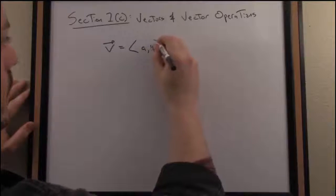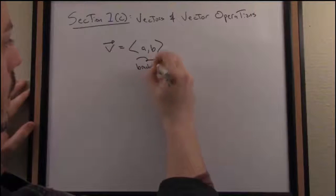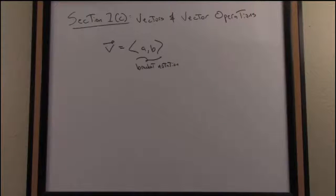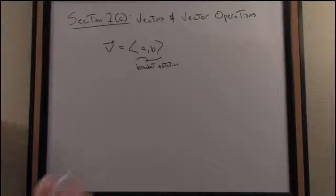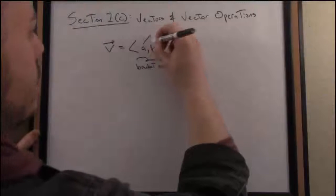And what I'm showing you here is something called bracket notation. So we can write a vector and list the elements of that vector in order. So this would be a two-dimensional vector. And the elements listed between the brackets are known as components, or the components of that vector.